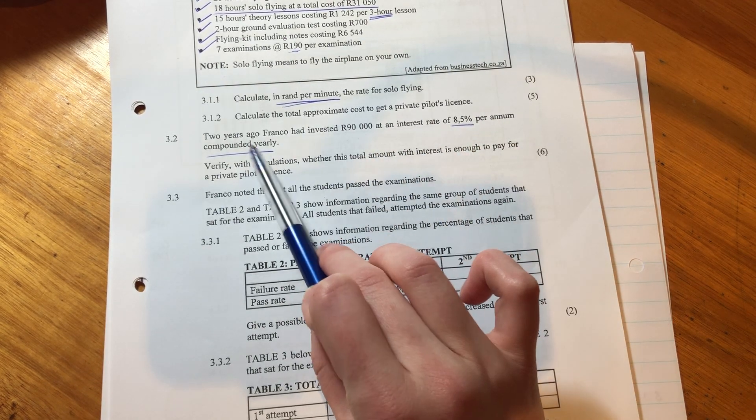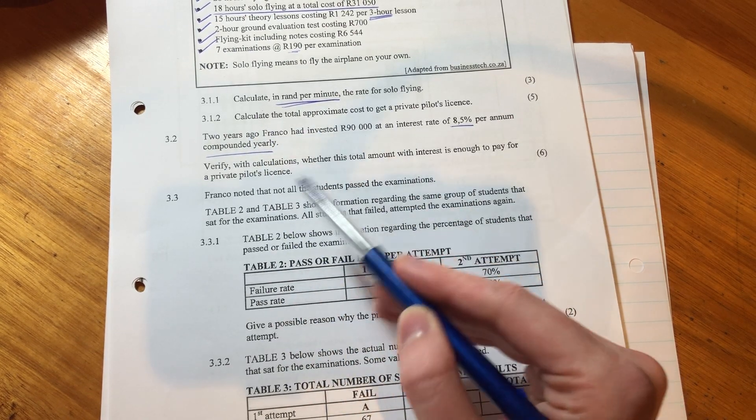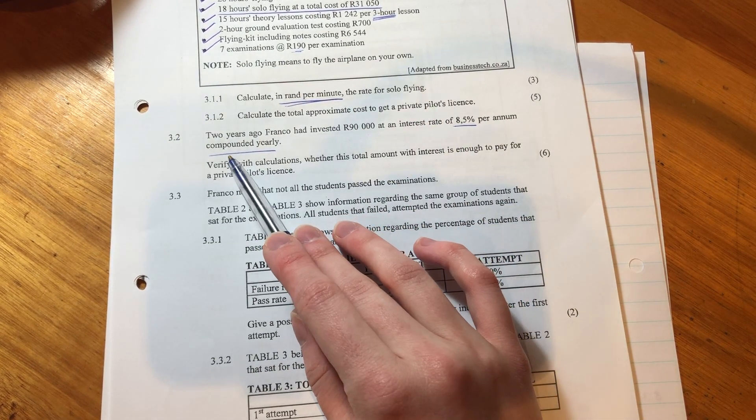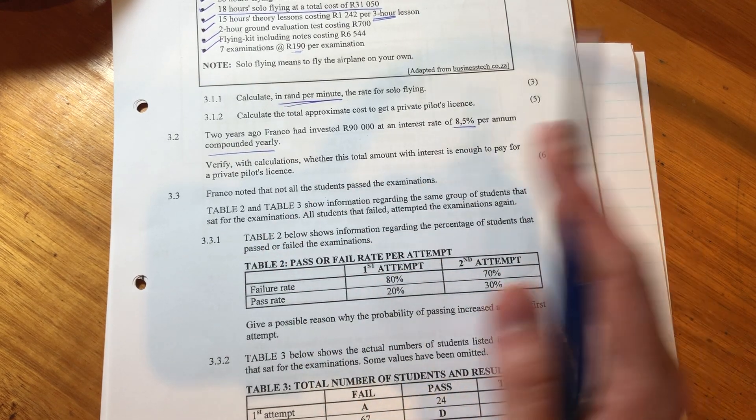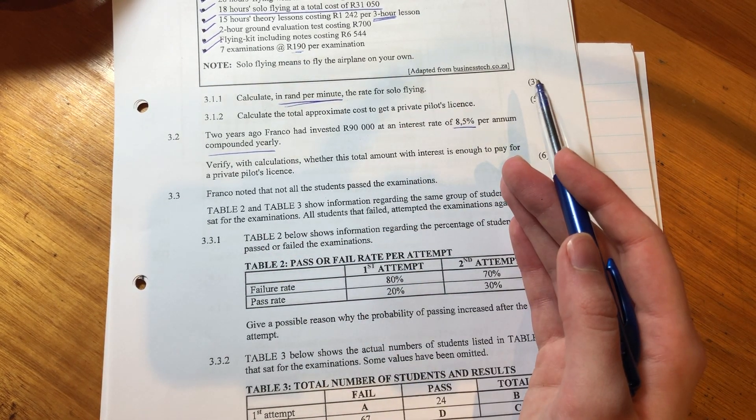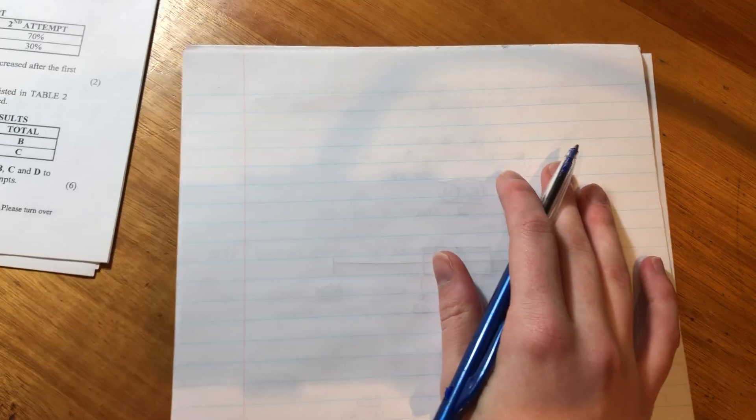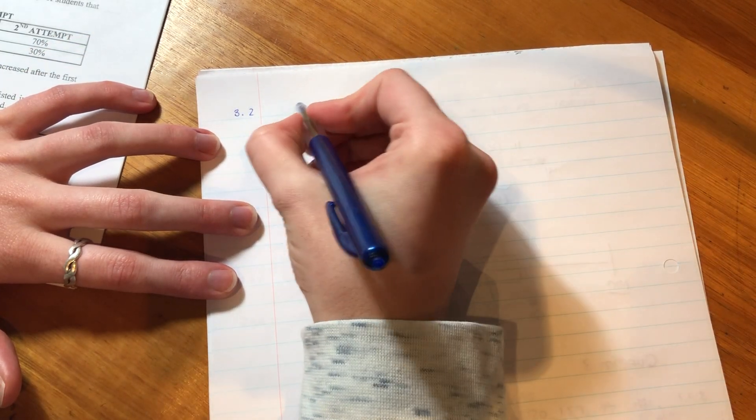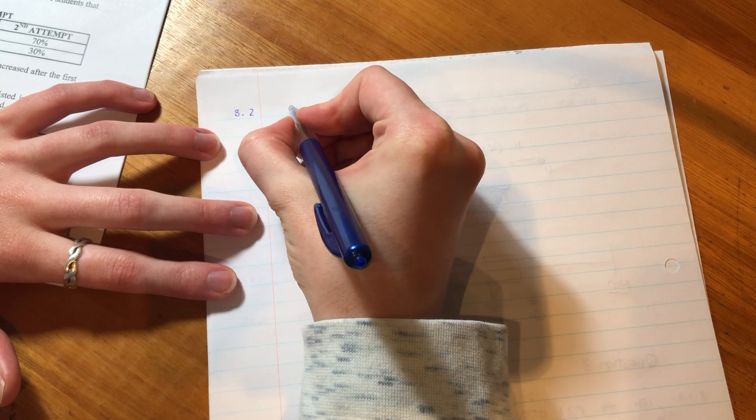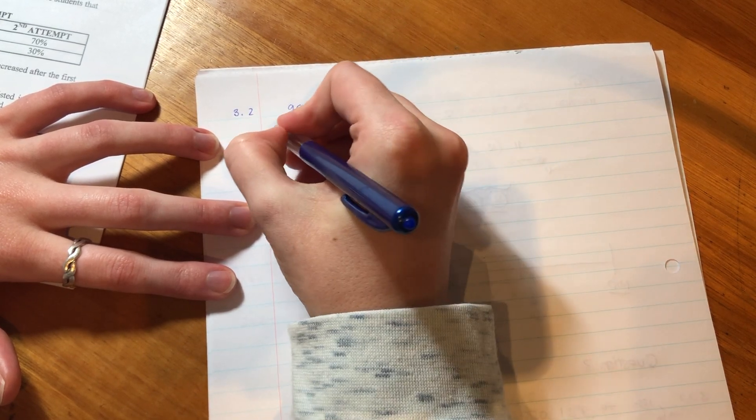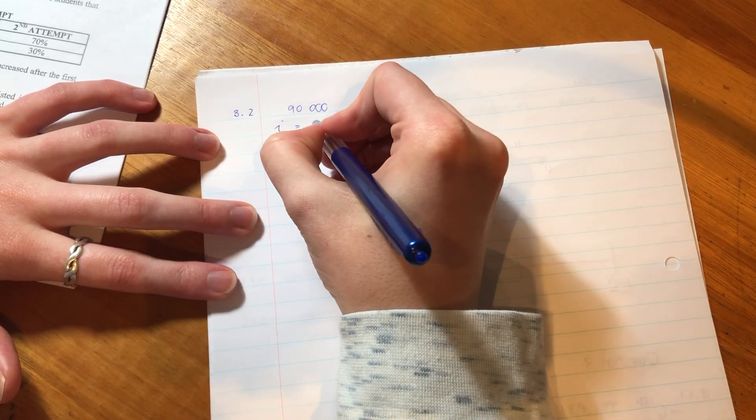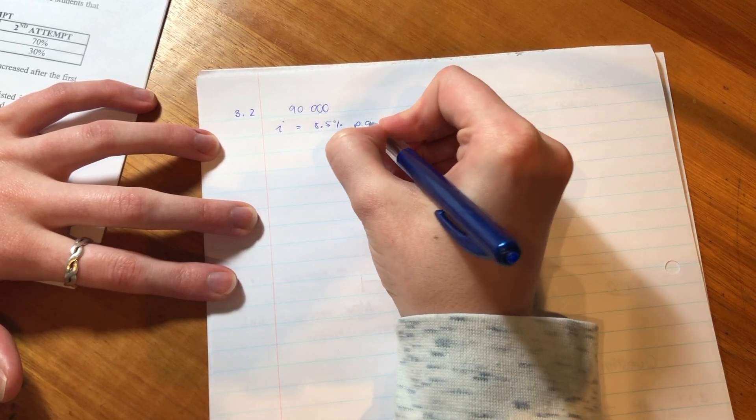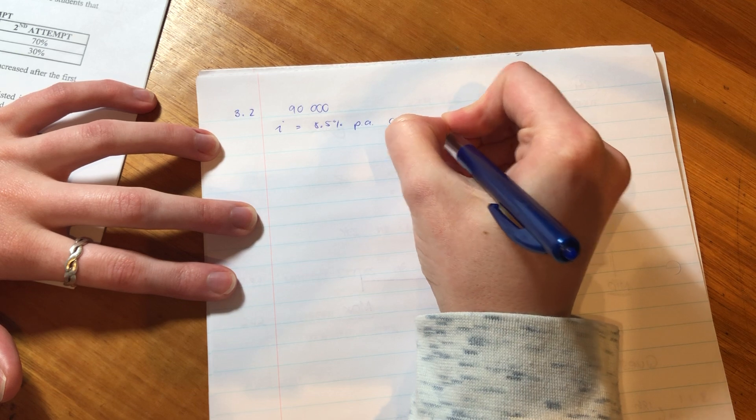And remember, compounded yearly means that as time goes on, we earn interest on interest. So, what I'm going to do is there is a formula you can use for compounded interest, and I'll show you that, but I'll also show you another way that you can go about calculating this because I want to give you options. So remember to always write the correct question reference. So we have 90,000 Rand, and his interest rate. That's how we got taught to do it at university when I studied financial math. So it's per annum compounded annually.